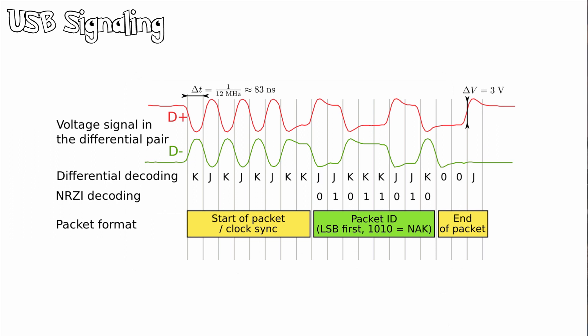Data is transmitted by toggling the data lines between the J state and the opposite K state. Serial data is sent in differential mode with opposite polarities on the two signal lines, which improves the signal-to-noise ratio and allows cancellation of common mode noise. The data is sent in NRTZ format to ensure a minimum density of signal transitions. USB also uses bit stuffing, where an extra zero is inserted after any six consecutive one bits; seven consecutive ones is always considered an error.